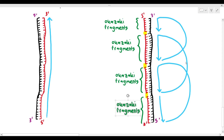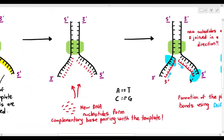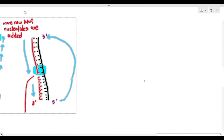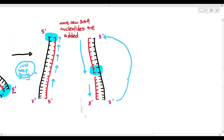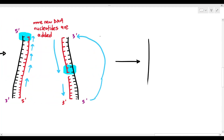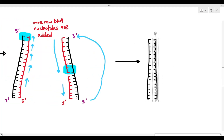The Okazaki fragments are named as such because they were actually discovered by a husband and wife scientist team named Suneko and Reiji Okazaki. That's why it was named as such — if you discover something, you get to have it named after you, which is bragging rights. These are the Okazaki fragments, and you can also see them on the lagging strand of the original DNA we had.